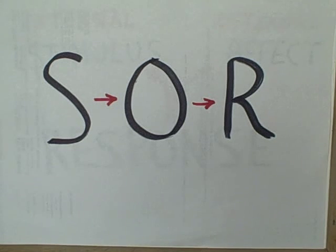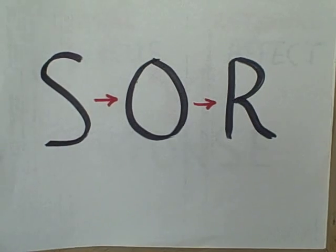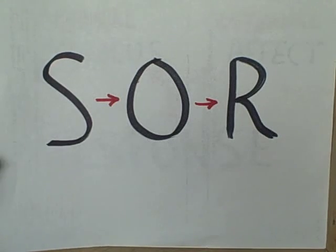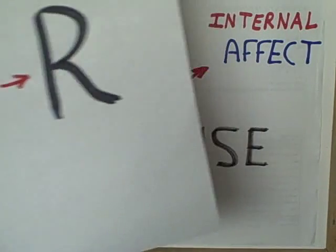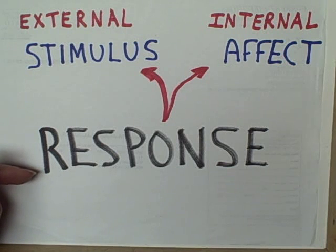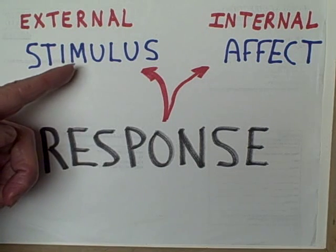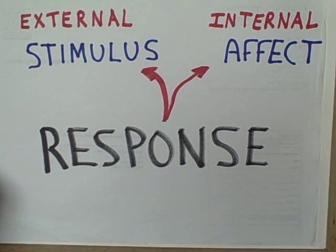It could be something that the organism says, or it could be simply a decision that the person or animal makes and carries out. What we do in the process of inference is we observe the response and then we try to infer what kind of stimulus elicited that response.